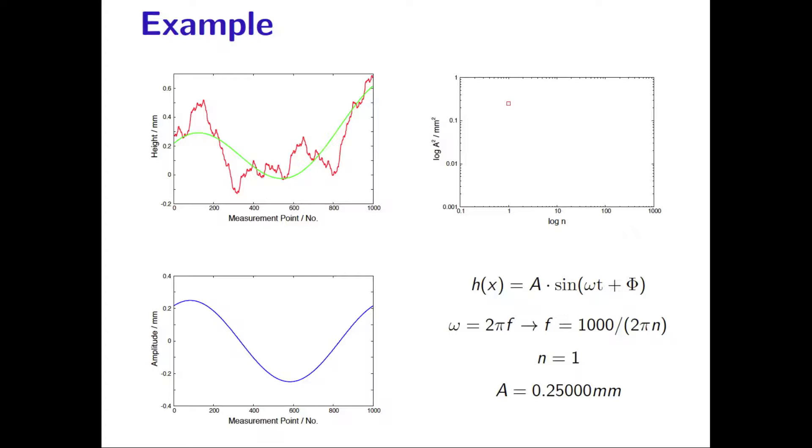Here, n is 1 and the amplitude A is 0.25 mm. In the upper left figure, we can now see the sum of the best fit line and the sinus wave shown in the lower left figure. The upper right figure shows the square of the amplitude A as a function of the number of sinus waves fitted into the measurement range.